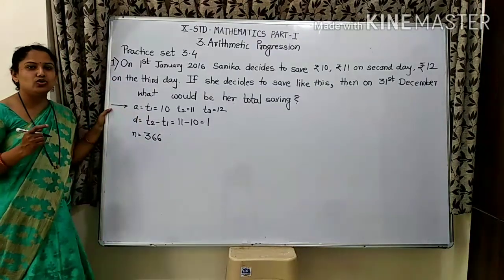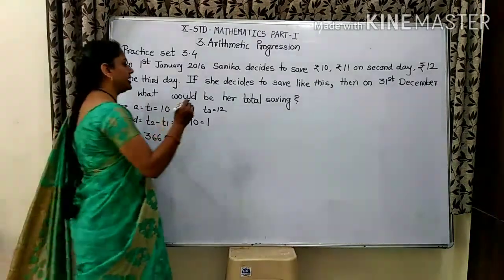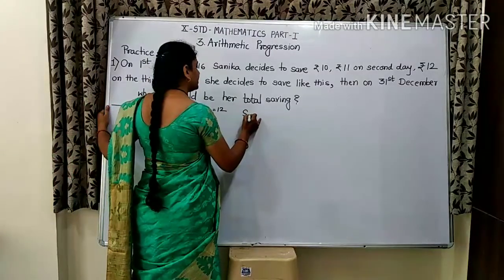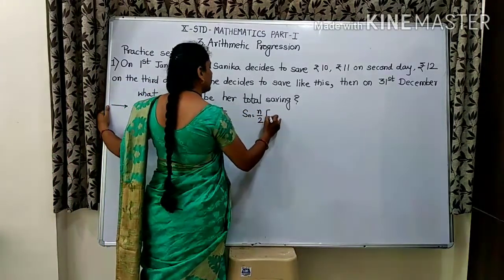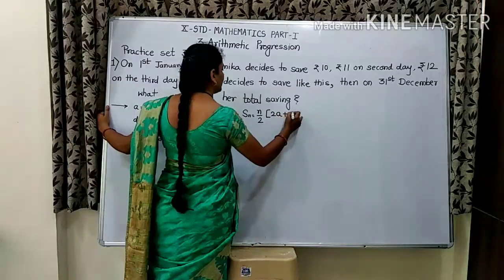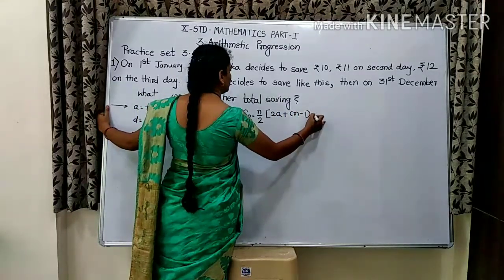Now what we need is the total savings. Total savings means S. Sum. Sn is equal to N by 2 in bracket 2A plus N minus 1 D.